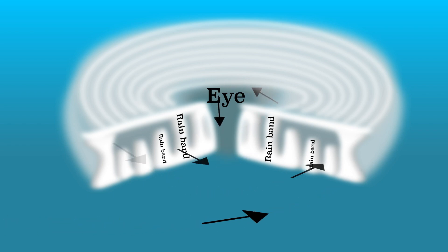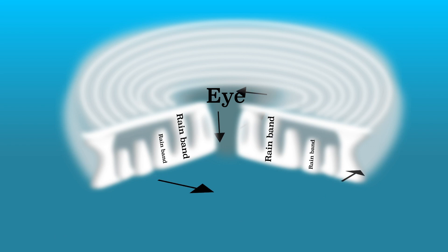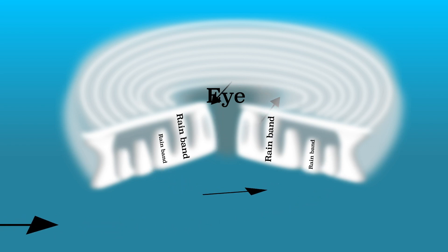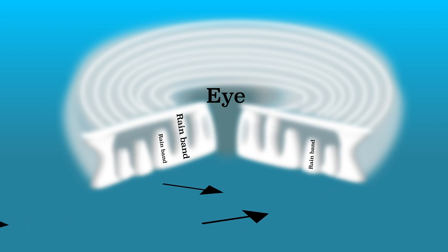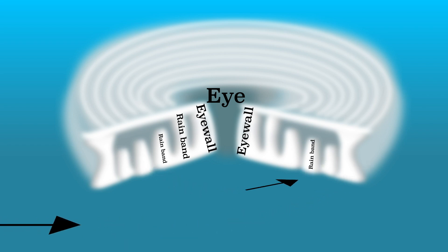Some people think when they are in the eye of the hurricane that the storm is over. This is therefore very dangerous because the storm quickly continues again. The most dangerous part of the storm is the eye wall. This is the rain band around the eye where the wind is strongest and the most precipitation falls.